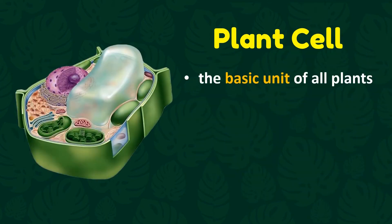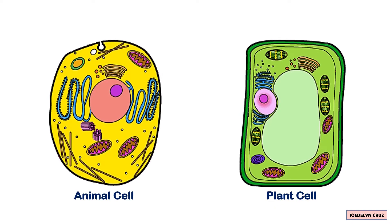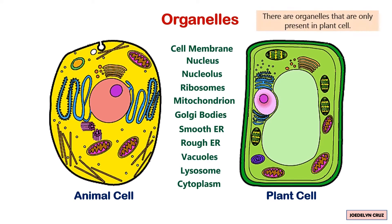Plant cell is the basic unit of all plants. It is a eukaryotic cell enclosed by a cell wall that contains a membrane-bound nucleus and other cell organelles. Plant and animal cells have many common organelles, but there are organelles that are only present in plant cells. These organelles make the plants differ from the animals in some aspects.